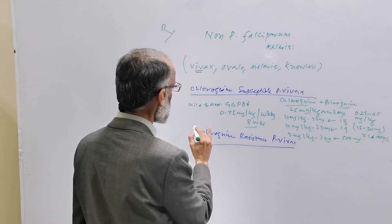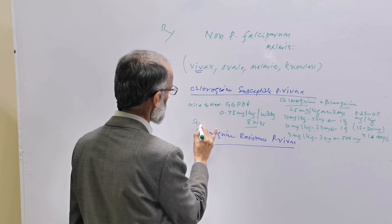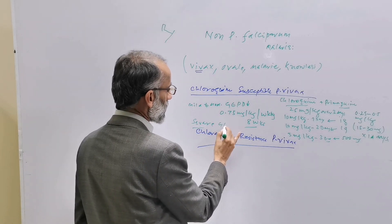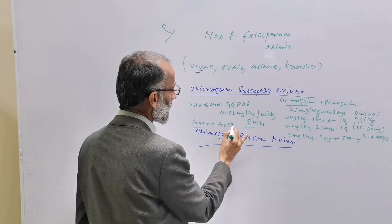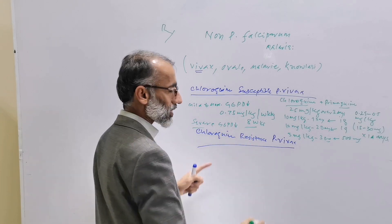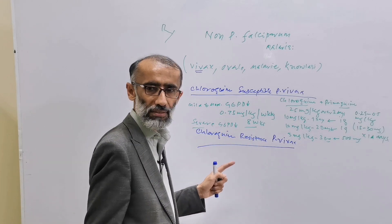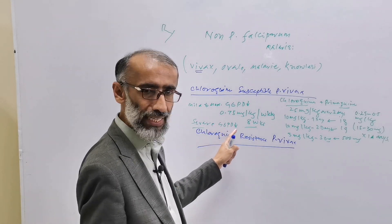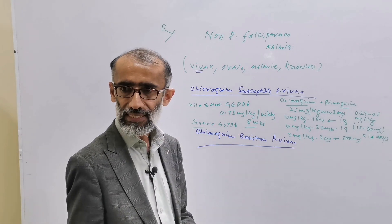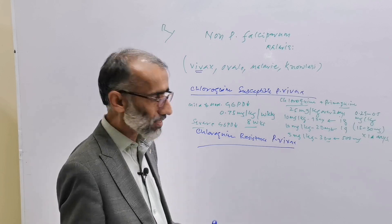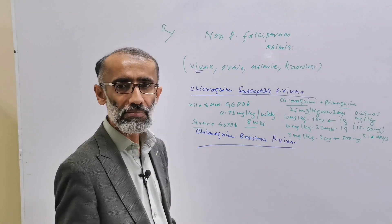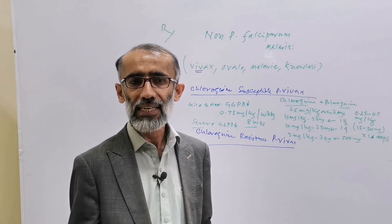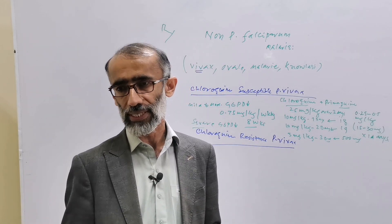In case of severe glucose-6-phosphate dehydrogenase (G6PD) deficiency, primaquine is contraindicated and should not be given.